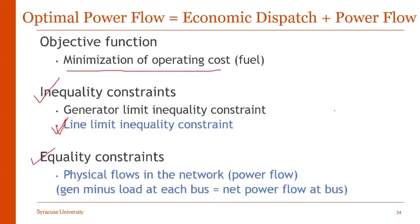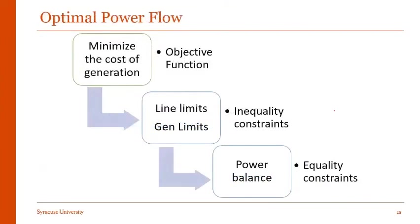To visualize this, the basic aim of OPF is to minimize the cost of generation as the objective function. We have different inequality constraints, which include respecting the line limits and respecting the generation limits. We also have equality constraints, which means we have to respect the power balance equations at each and every bus.